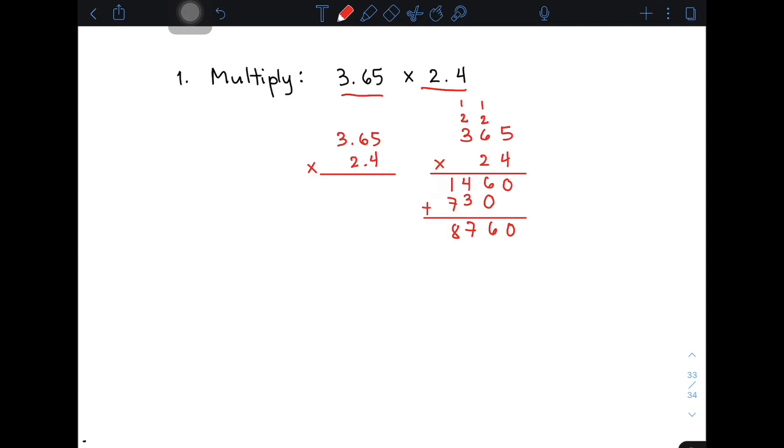After multiplying those whole numbers, you need to count the number of decimal places. We have here 1, 2, 3 decimal places from the two decimals. To find the final answer, start counting from the right: 1, 2, and 3. Therefore, the correct answer is 8.760 or 8.76.